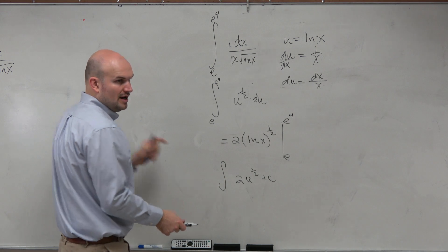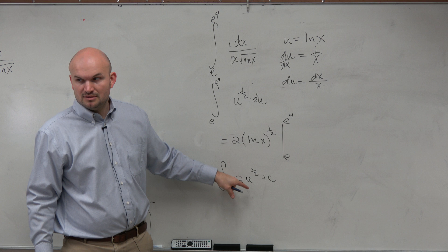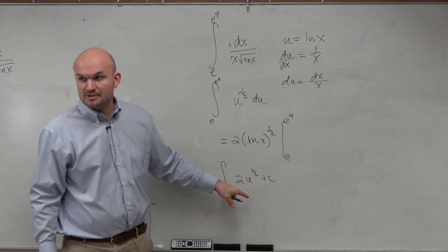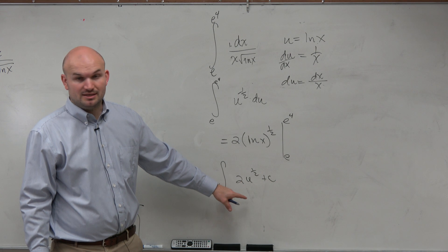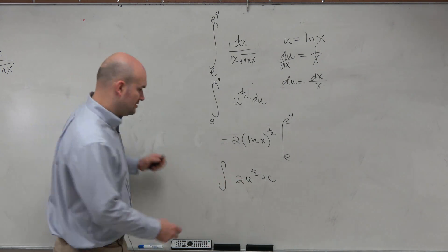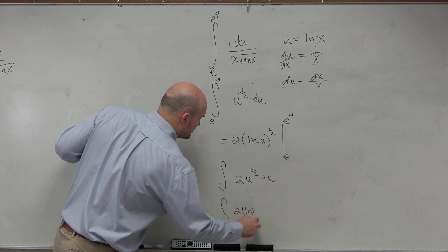2 u to the 1 half plus c, and then I'd just plug back in u, which is ln of x, sorry. Right? If these numbers weren't up there, I could just plug those back in there. Yes, that's what we did last class period, was just plug the values back in, plug u back in, and then you would get your integral 2 ln 2 to the 1 half power.